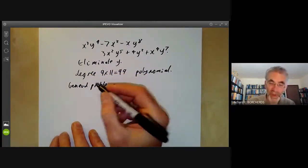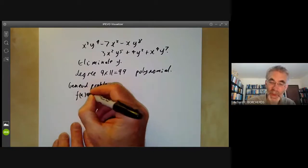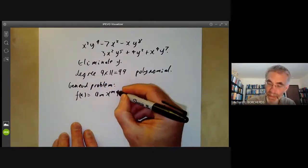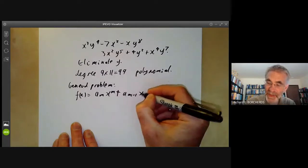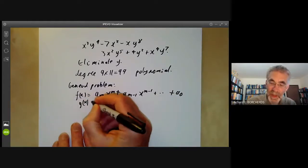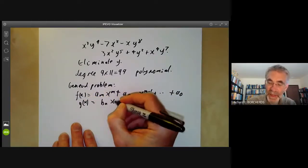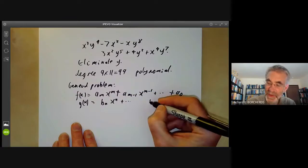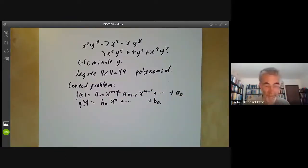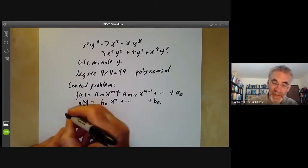So let's look at a more general problem. Suppose I've got two polynomials, f of x, which is am x to the m plus am minus 1 x to the m minus 1 plus a0 and g of x, which is bn x to the n all the way down to b0.